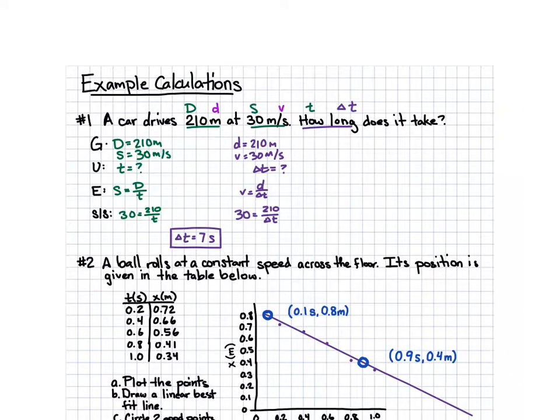All right. At this point, plug in your numbers. So instead of S, write 30 equals D is 210, and T is unknown. At that point, it's just a math problem. Go ahead and solve that now. And that's it. Any questions?